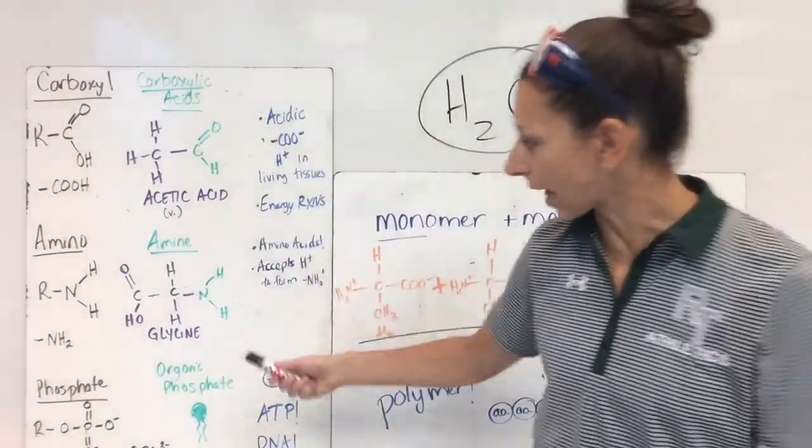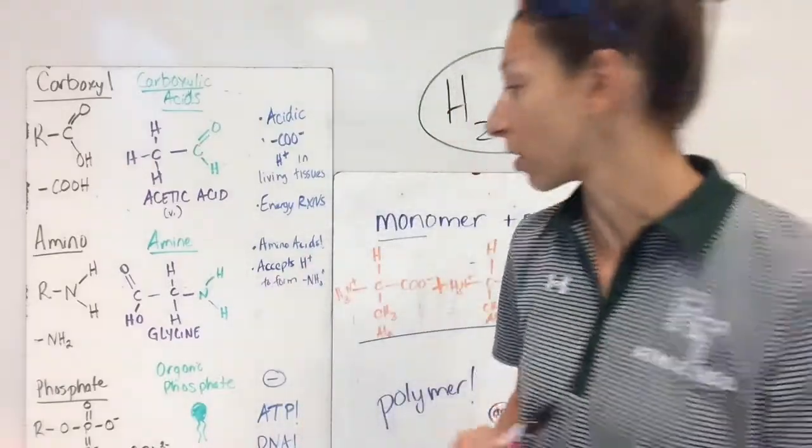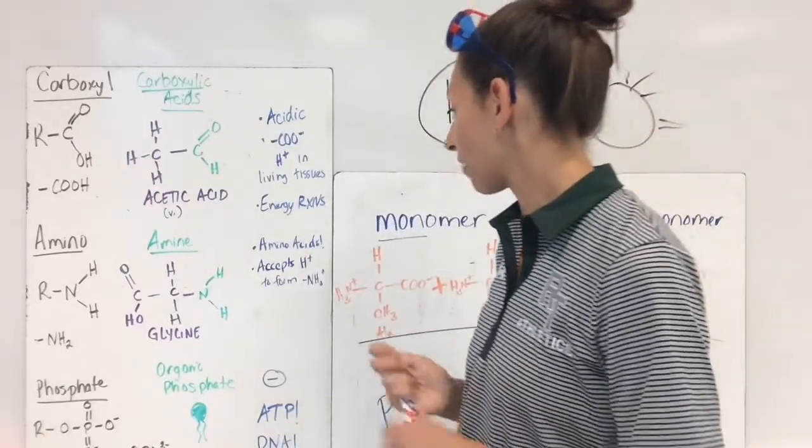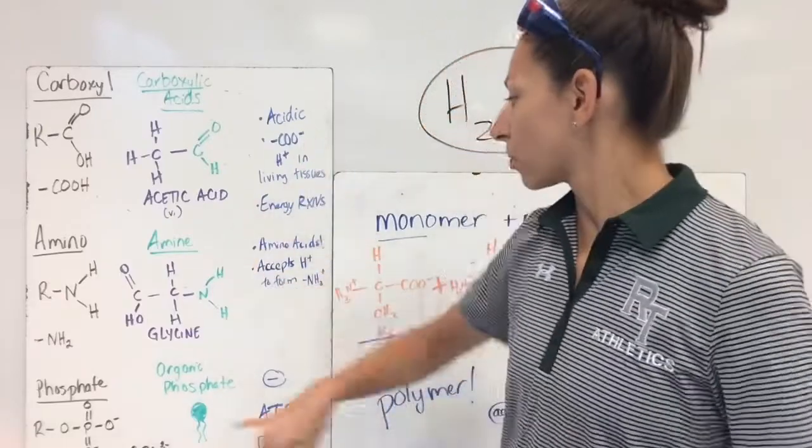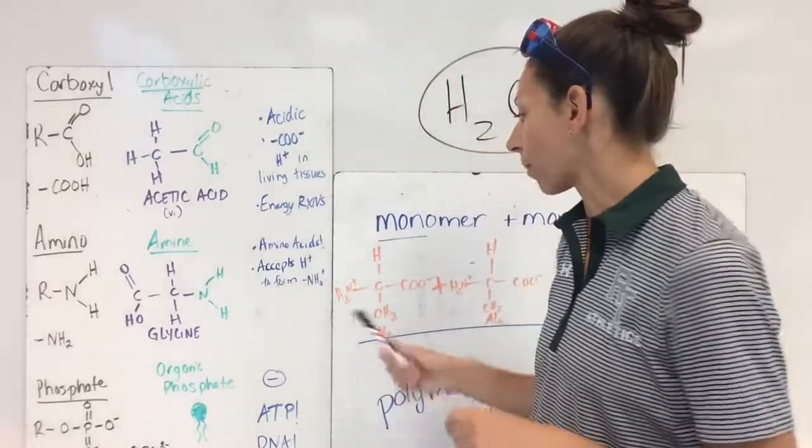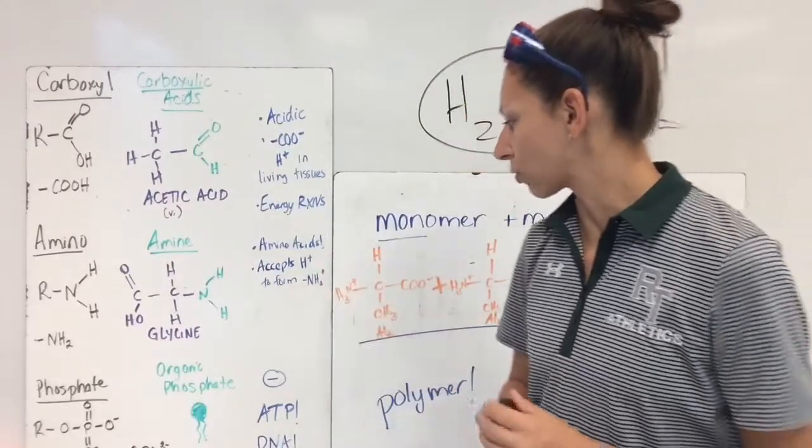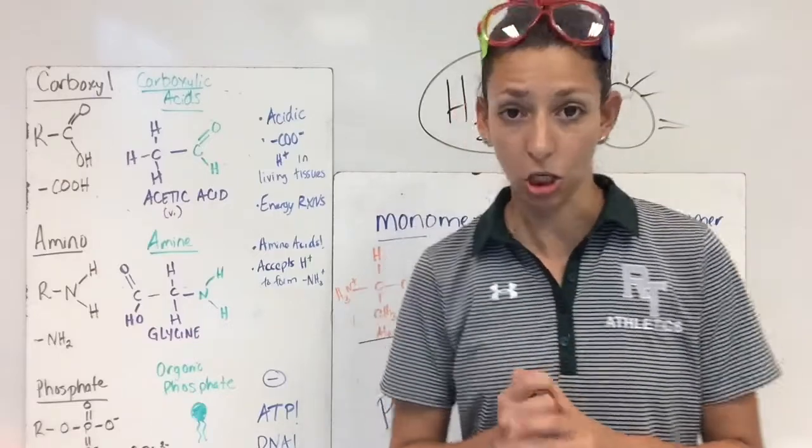Our amines are the class. And our example, it would be glycine, which in fact is an amino acid, one of our 20 essential amino acids in our living organisms. So our amino groups are going to be most present in amino acids. It's going to accept hydrogen ions to form this particular group, NH3+, in living tissues.